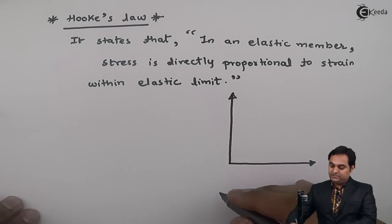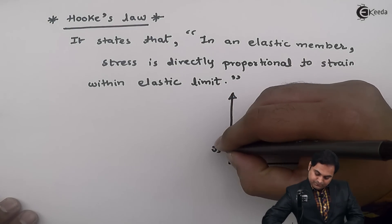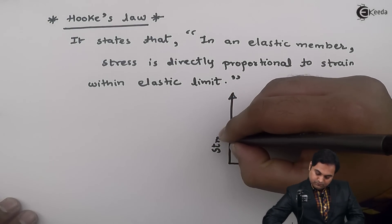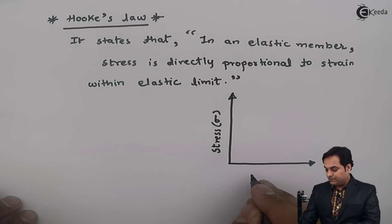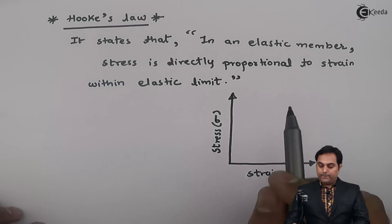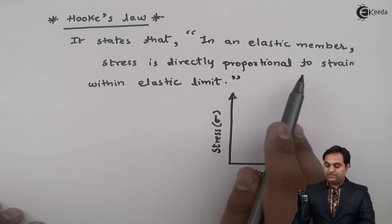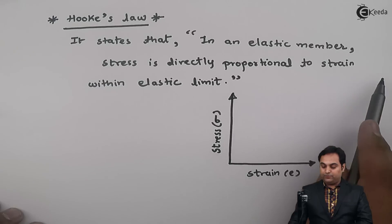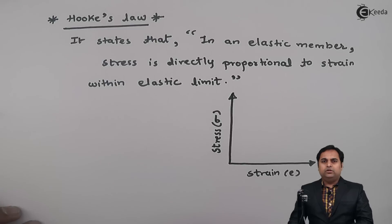On the y-axis we have stress, and on the x-axis we have strain. Hooke's Law states that in an elastic member, stress is directly proportional to strain within the elastic limit.